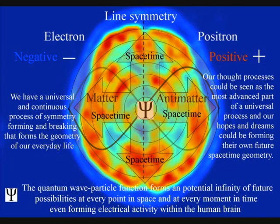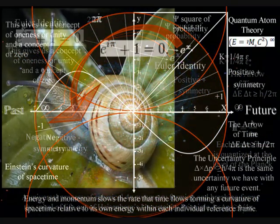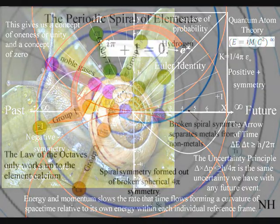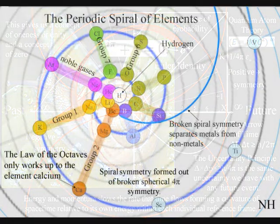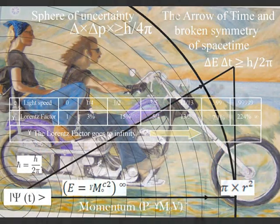This process is totally universal and interactive. From the largest object to the smallest creature, right down to the smallest element of the periodic table, each will slow the rate that time flows, forming a curvature of spacetime relative to its own energy or mass.